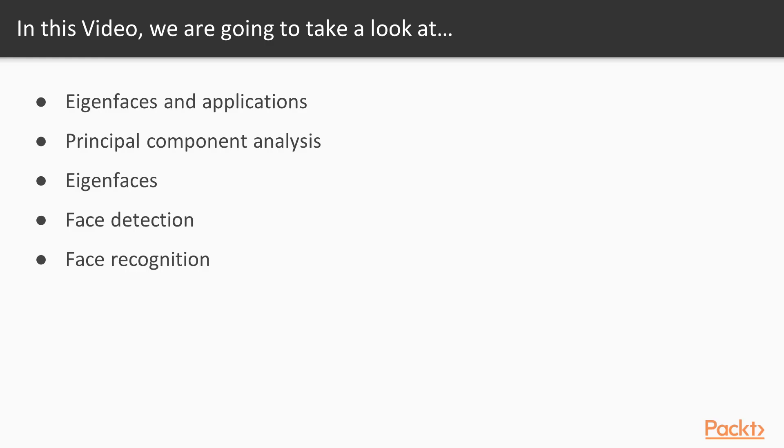We start by discussing on high level what eigenfaces is and what are its applications. Next we'll learn about principal component analysis and how it can be used to reduce the size of the feature vectors by only saving the features that are most significant. We'll see how PCA aids in generating eigenfaces from a digital image, followed by how you can use images represented as eigenfaces to detect presence of face in an image and further determine how it can be used to recognize a face in an image post detection.